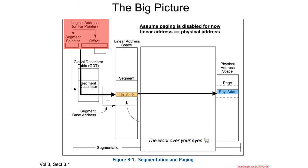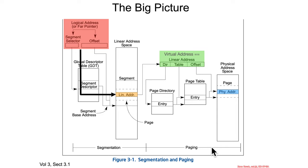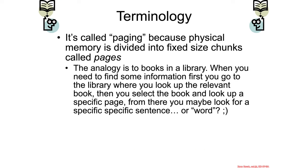This was the diagram we had before, with logical addresses going through the GDT, and linear addresses going directly to physical. Now, to remove the wool from your eyes, we have virtual addresses, which are the linear addresses as analyzed through some sort of page table structure. The terminology for this section is called paging because chunks of memory are divided into fixed size pieces called pages.